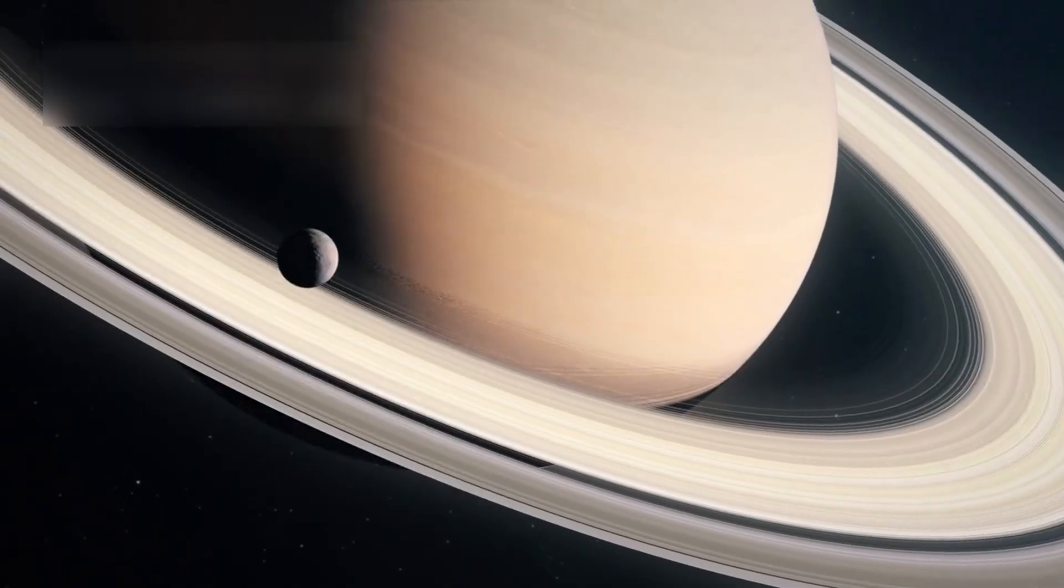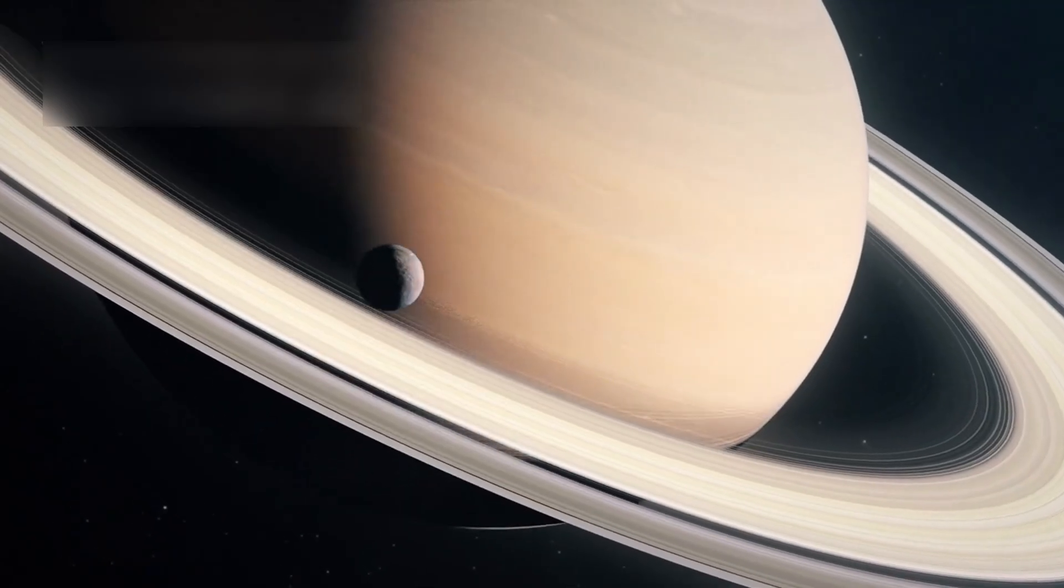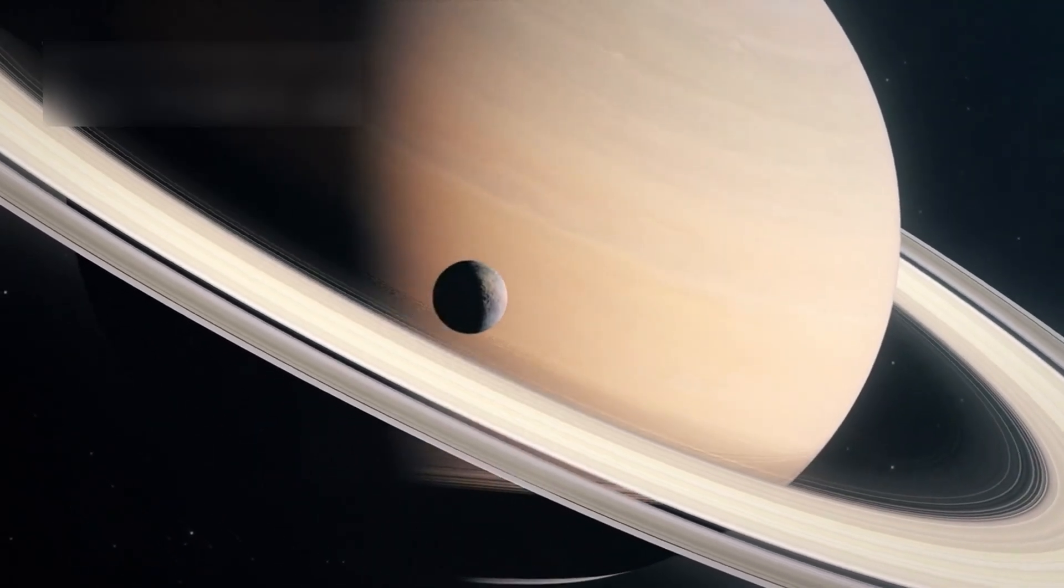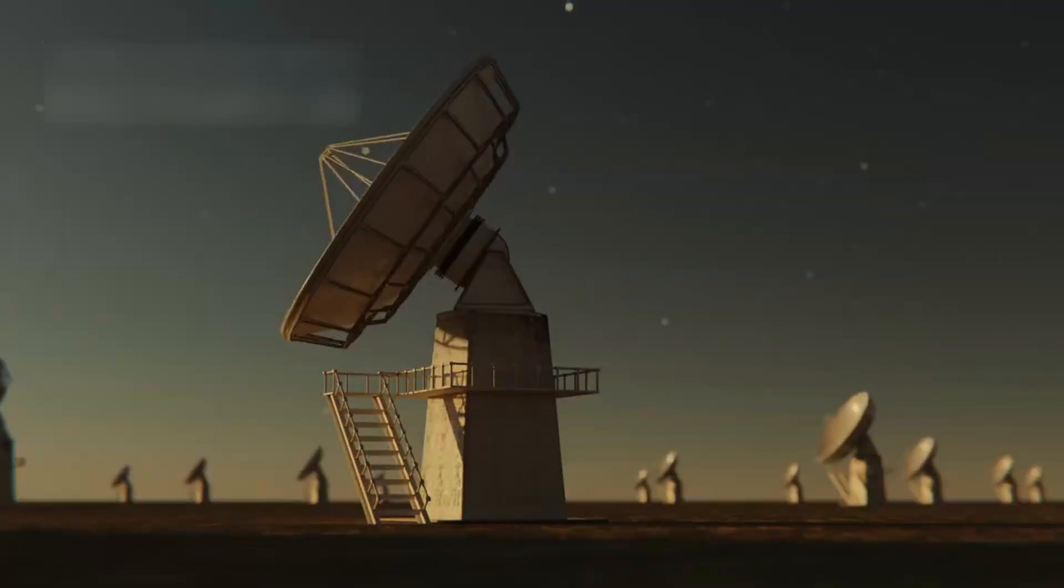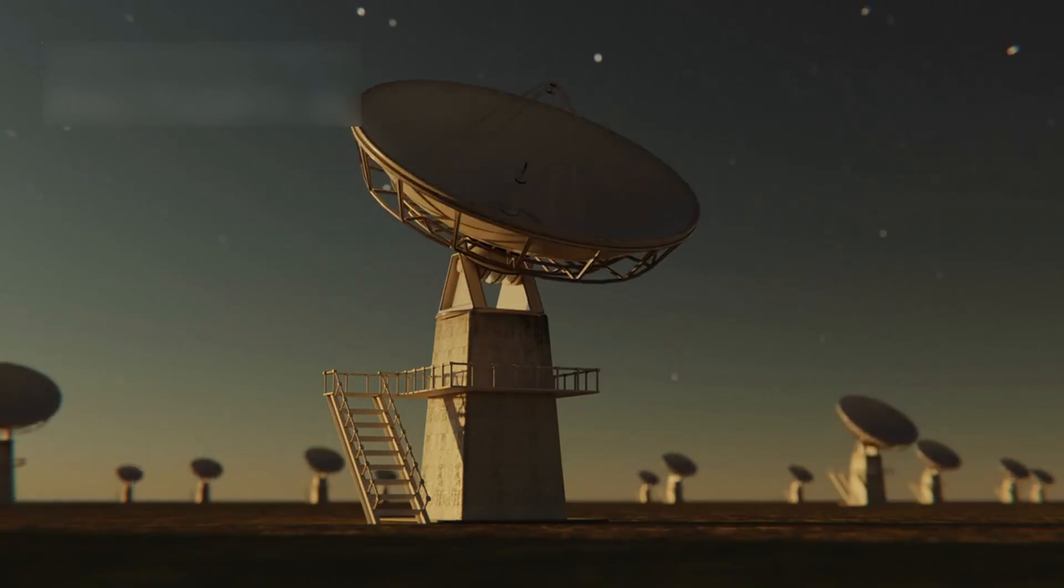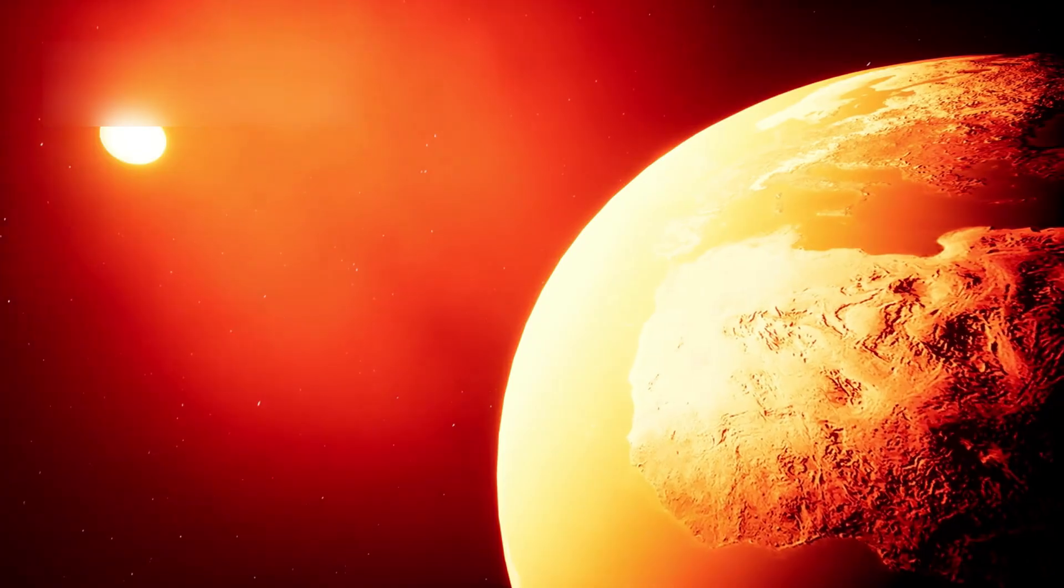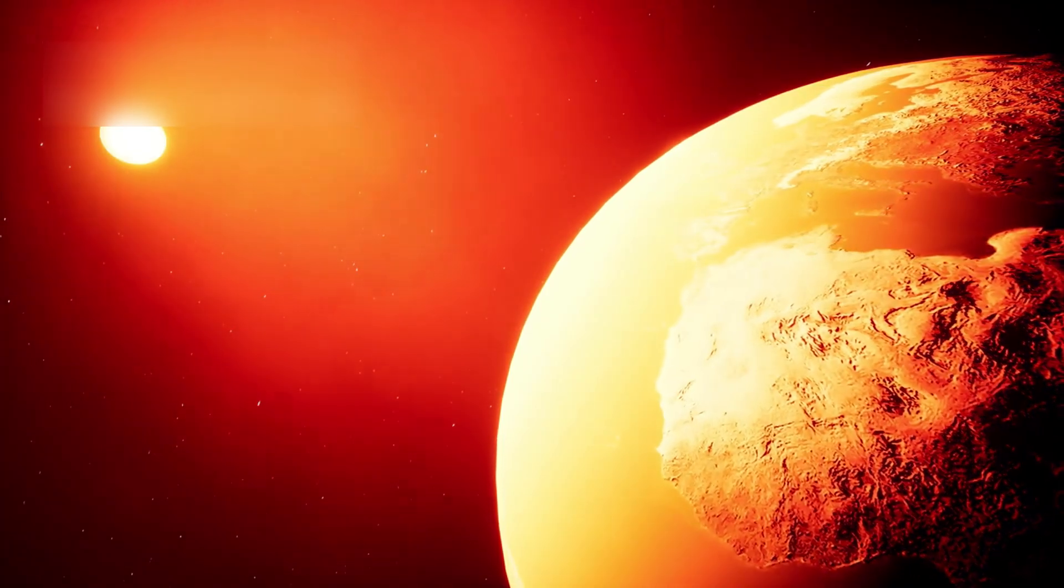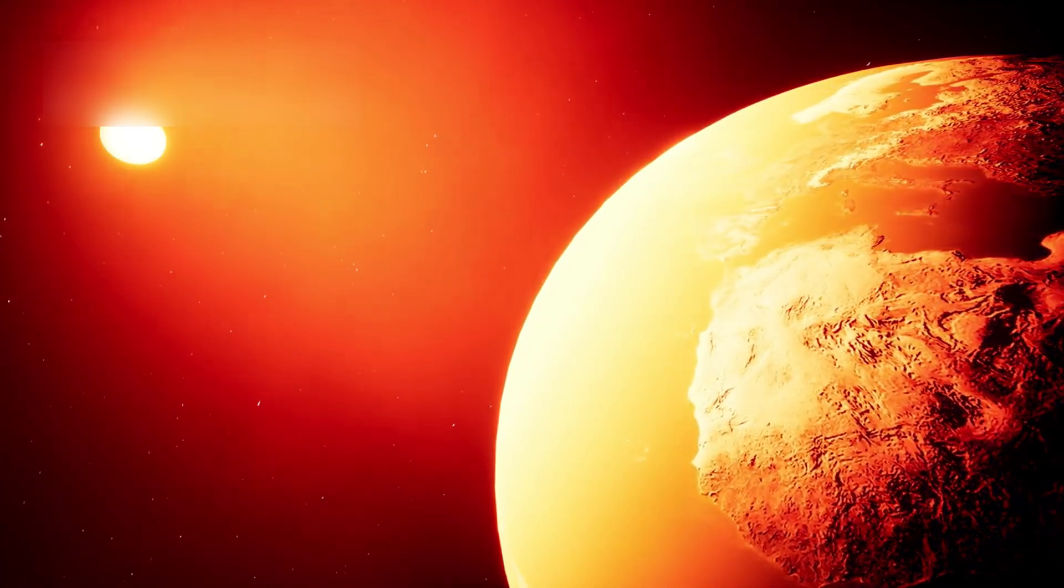Enceladus, a moon of Saturn, showed signs of geysers erupting. These geysers contained water and gas, hinting at subsurface oceans. This inspired more missions to check these mysterious moons. Every new photo or wave scan from the probes brings more insight. They taught us about storms, magnetic fields, and space radiation.